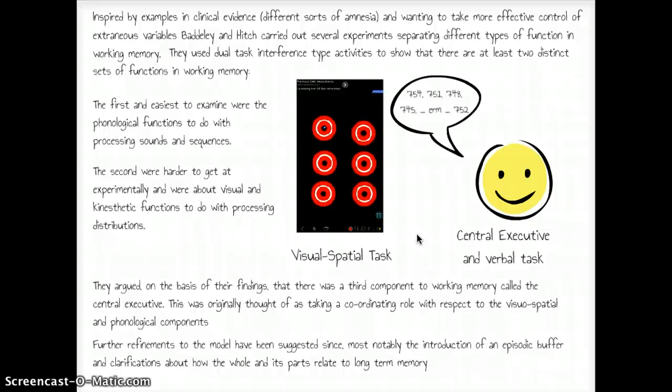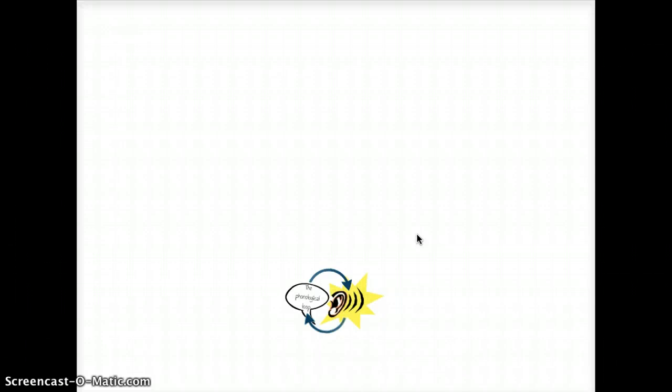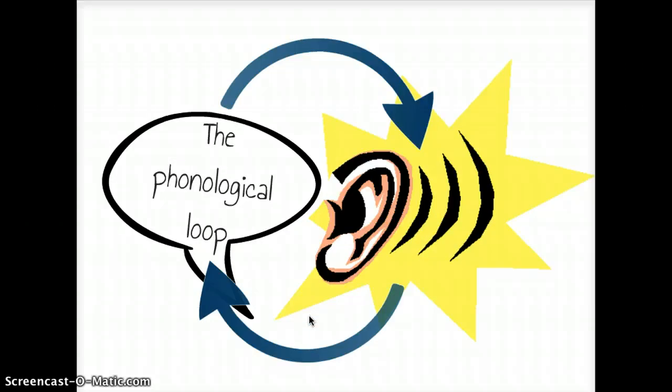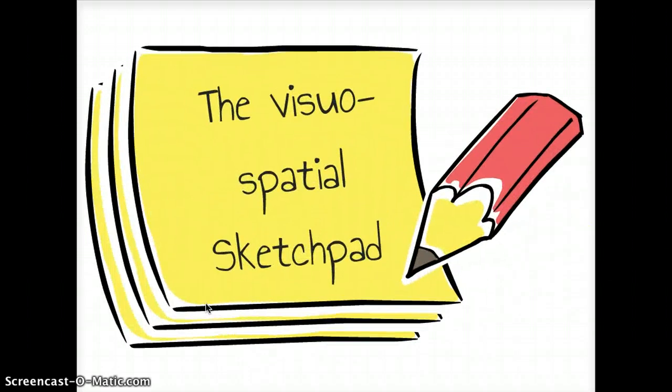There were further refinements, including the episodic buffer. The first part of the model is the phonological loop. Here we think about this inner ear, inner voice thing in a cycle - that's basic rote rehearsal in the sense we're familiar with from memory studies. The other thing is the visuospatial sketch pad, or scratch pad. The idea being that there's somewhere in our minds, our brains, that we use to represent the distribution of things across, like a surface, like in a room or across a television screen.